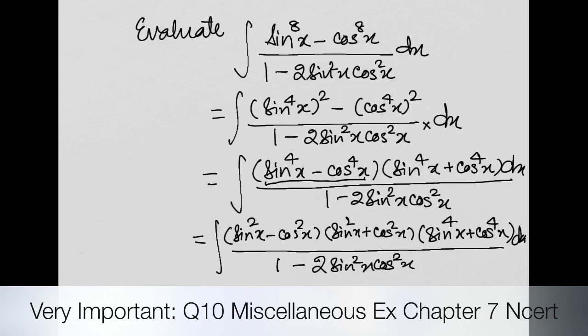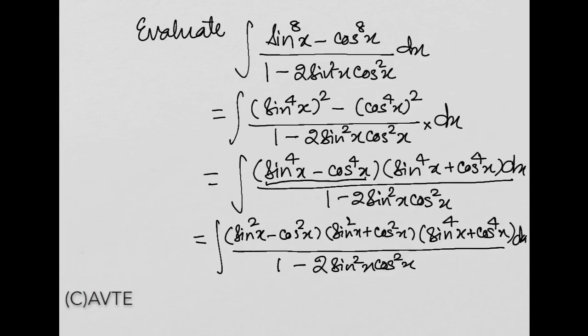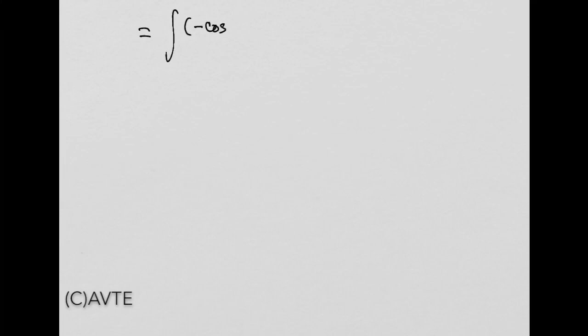अब इस expression में एक चीज़ समझ में आती है कि ये 1 हो गया है. और ये बन गया है minus cos 2x का formula. तो मैं इस expression को simplify करके लिखता हूँ — मेरे पास आ जाएगा minus cos 2x. Second part का मान लिख दिया था.